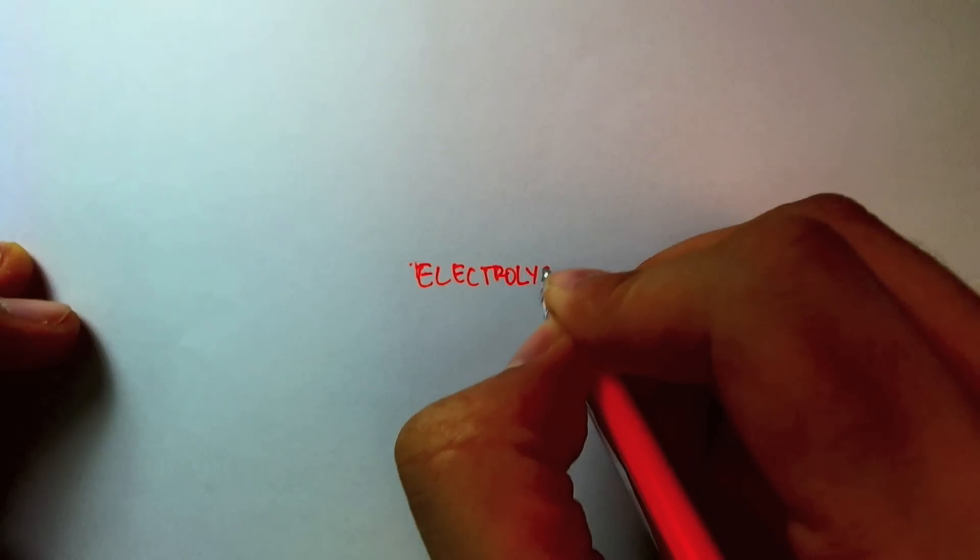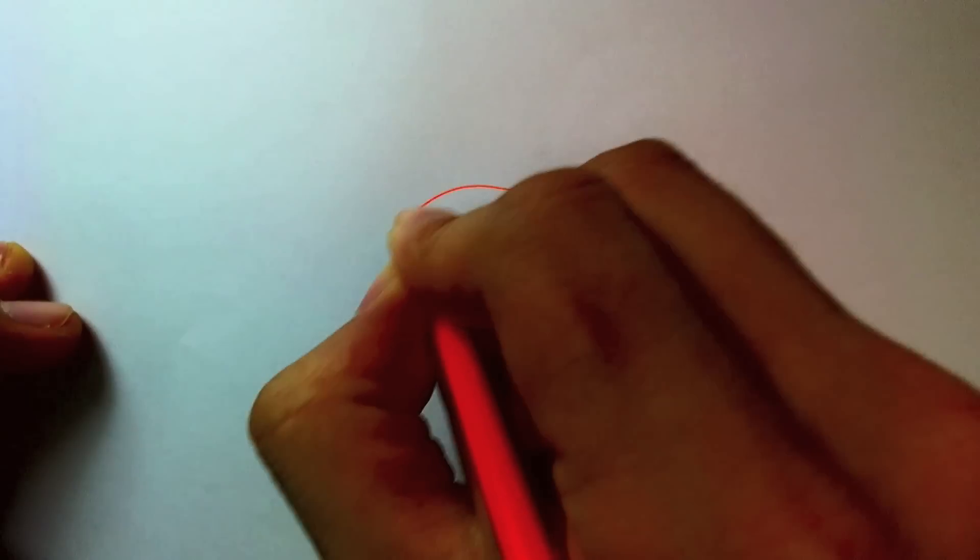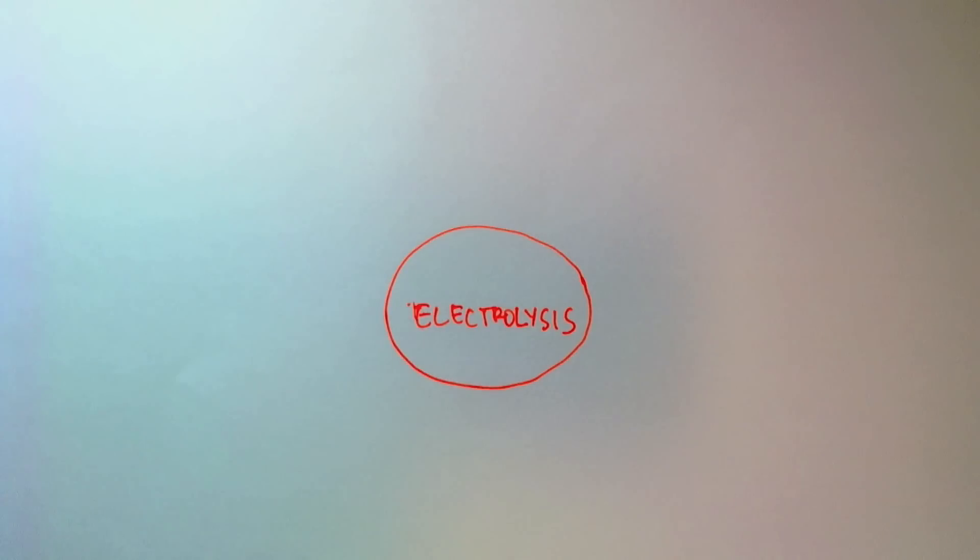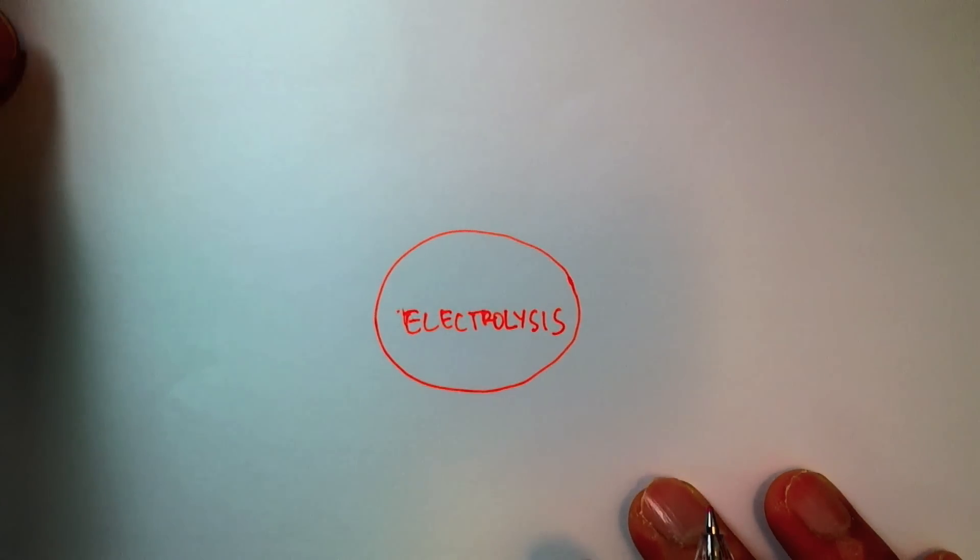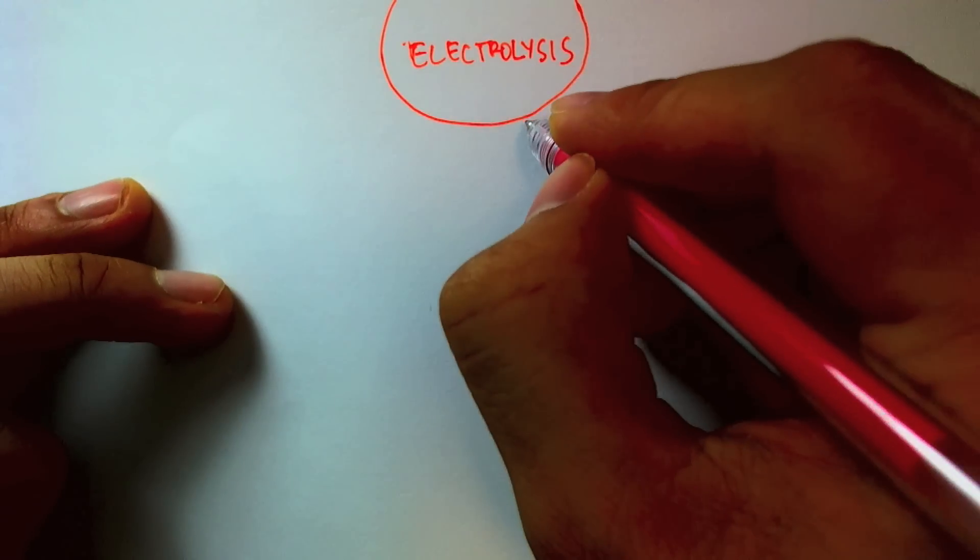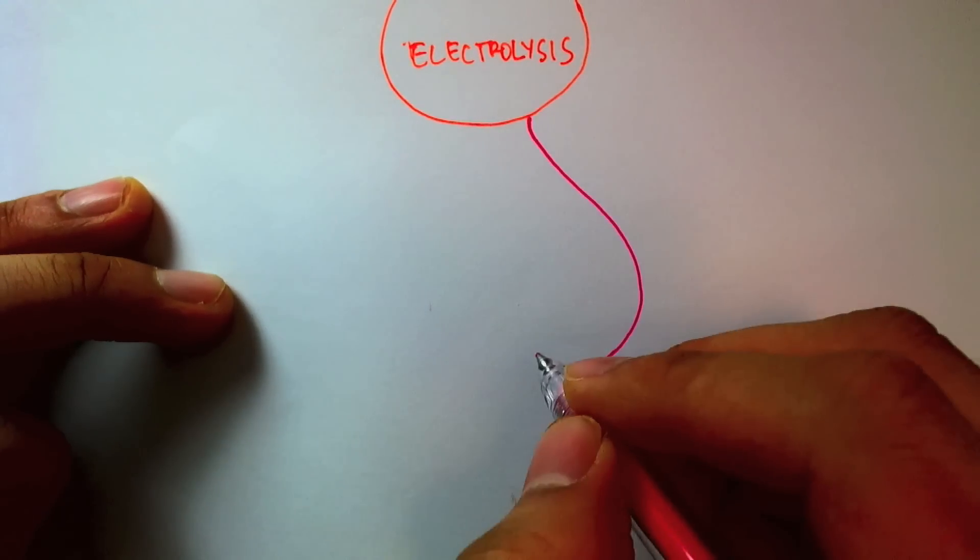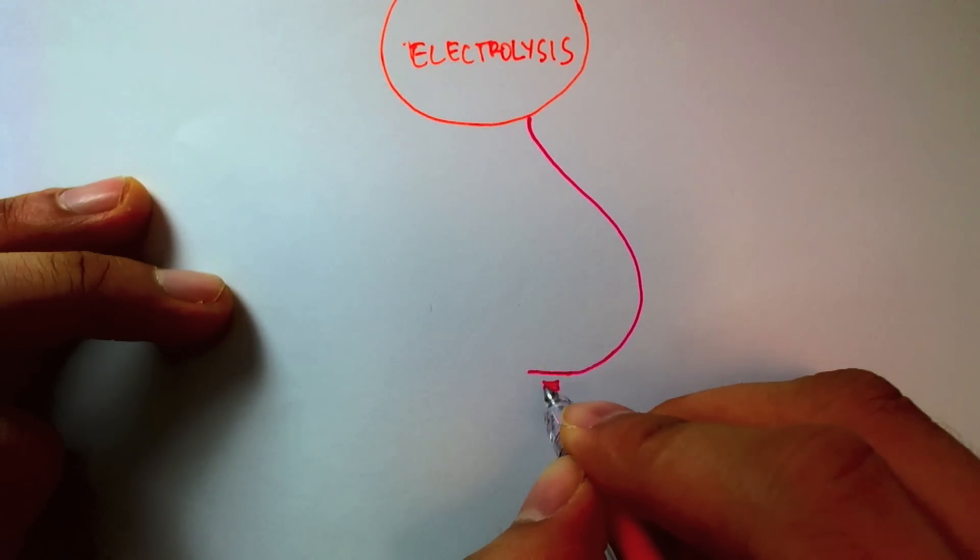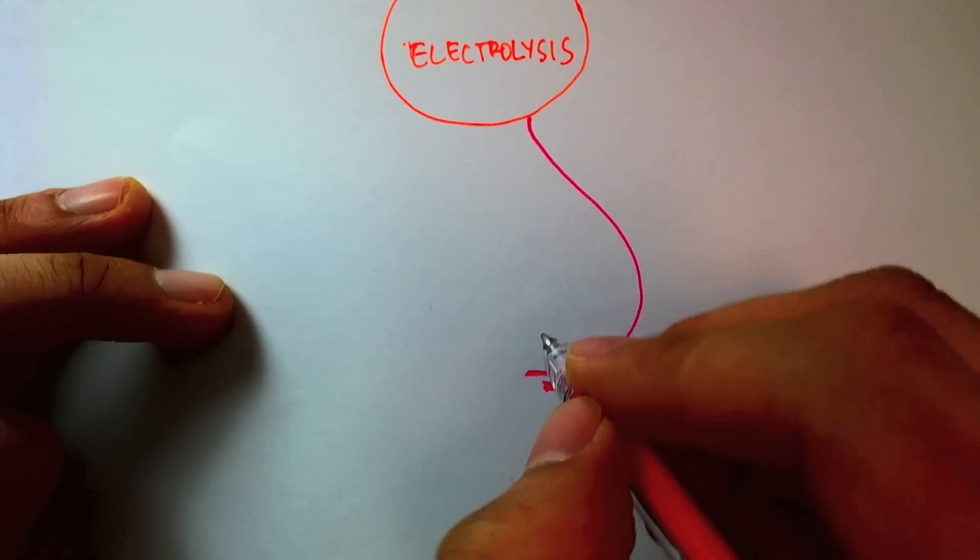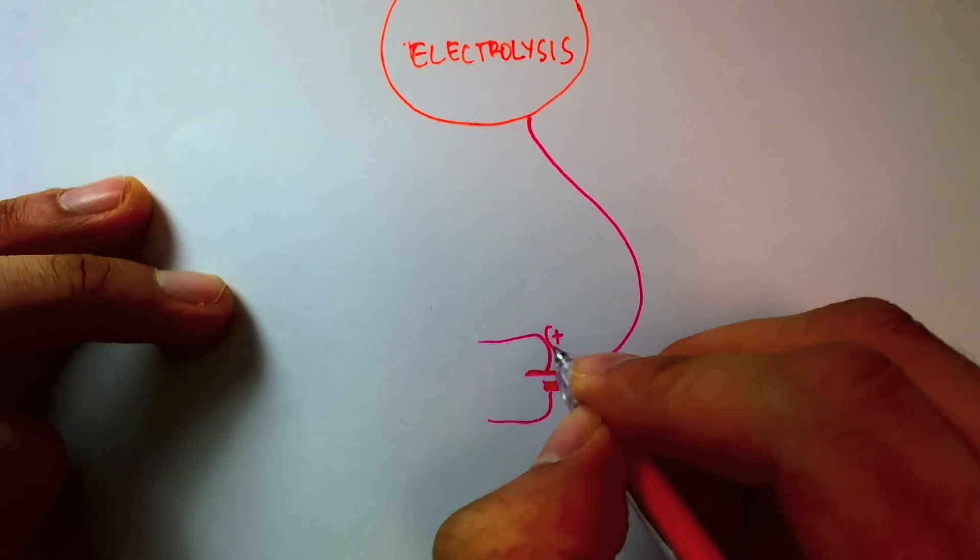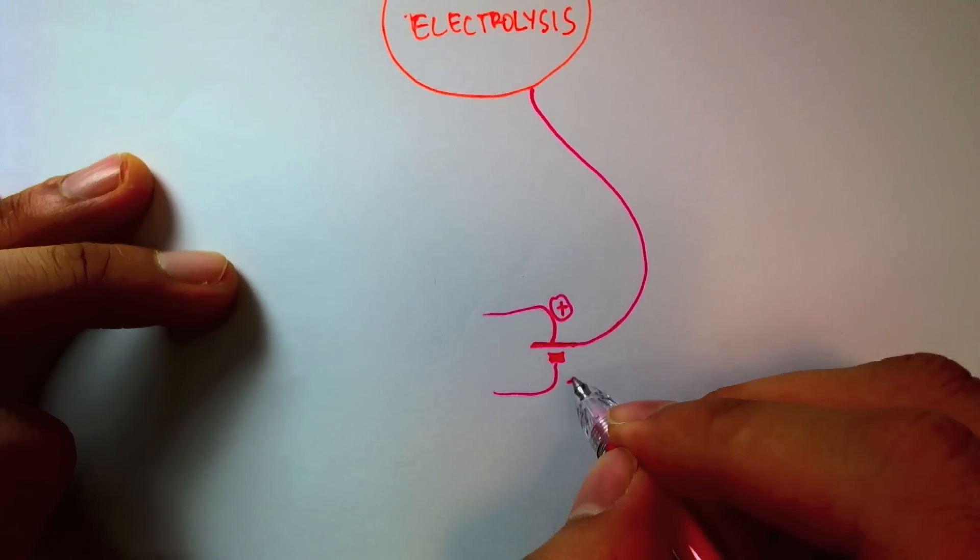So let's start with electrolysis. That's my main idea in the center. So the general idea with electrolysis is that I will have electrodes connected to terminals of a cell. So I'm going to have my cell here, positive terminal and negative terminal.